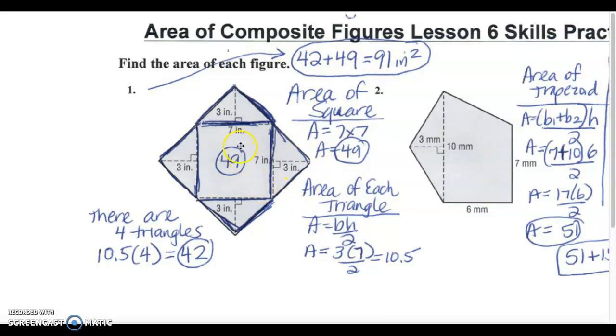The area of each triangle has a height of three and a base of seven. When I multiply seven times three base times height divided by two is the formula for the area of a triangle. Seven times three divided by two is ten point five. Since there were four triangles I did ten point five times four.